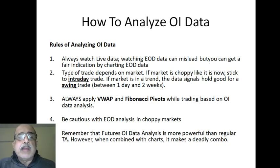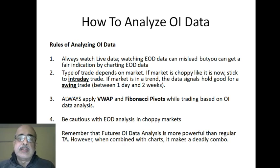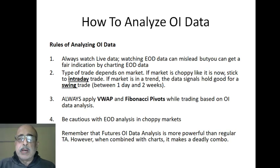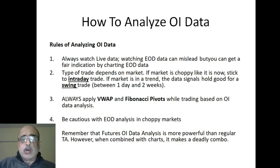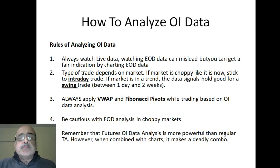The type of trade you enter depends on the type of market. Right now we're in a choppy market — today there were around 639 advances and 1,200 declines and the market shot up 50 points, which is not natural. In a choppy market, stick to intraday trades. In a bullish trend like 2017 or 2014 — which comes once in two years — the data signals hold good for swing trades. Always apply VWAP, which you already learned.